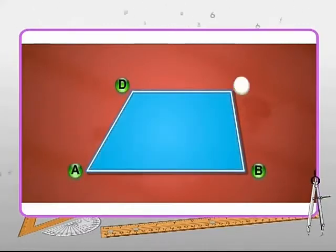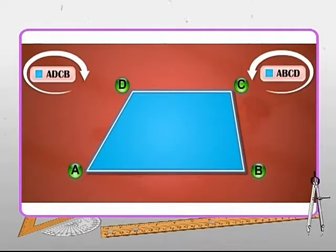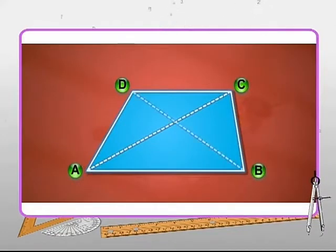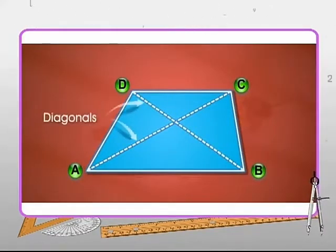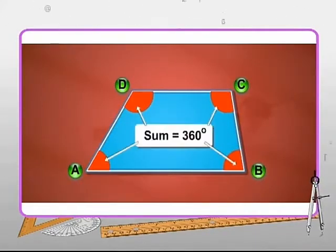The line segments that join the opposite vertices of a quadrilateral are called its diagonals. The sum of the four angles of a quadrilateral is equal to 360 degrees.